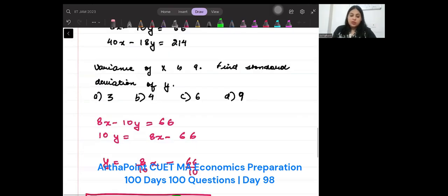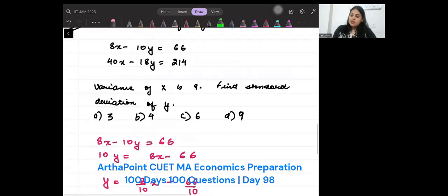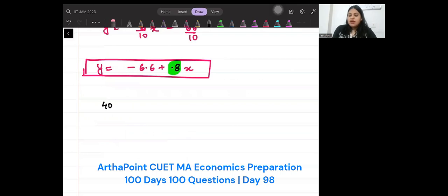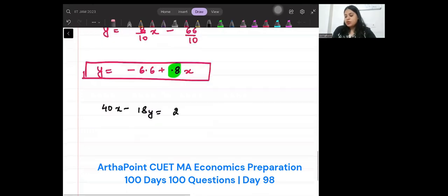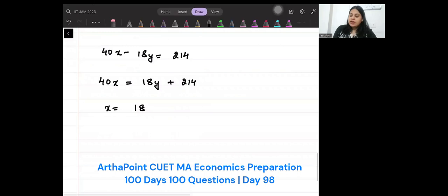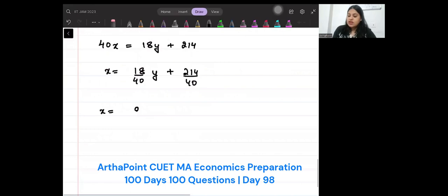Now you must go ahead and solve the other equation. So it says 40X minus 18Y is 214. So you will get 40X is equal to 18Y plus 214. So you will get X is equal to 18 divided by 40Y plus 214 divided by 40. So your X will become 9 by 20Y plus 214 by 40. This is X in terms of Y. So this becomes when X is regressed on Y.